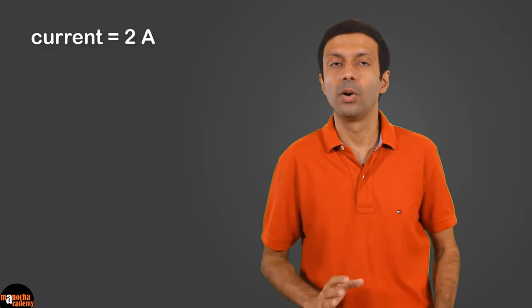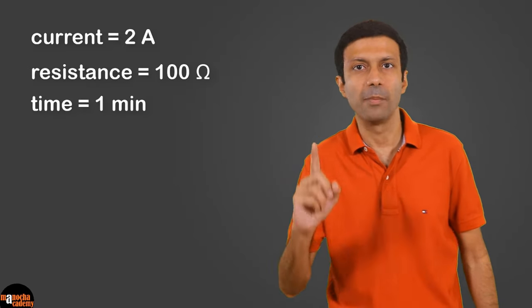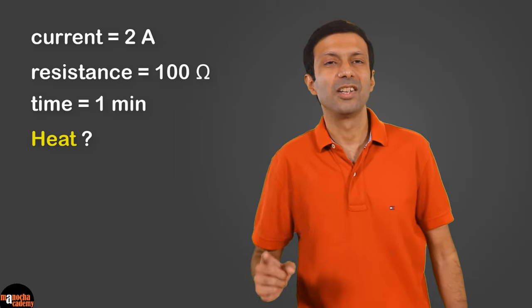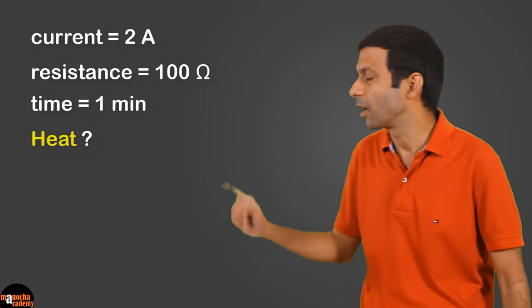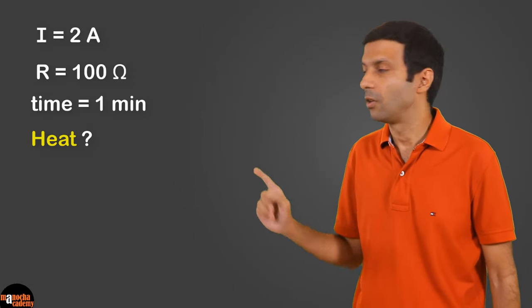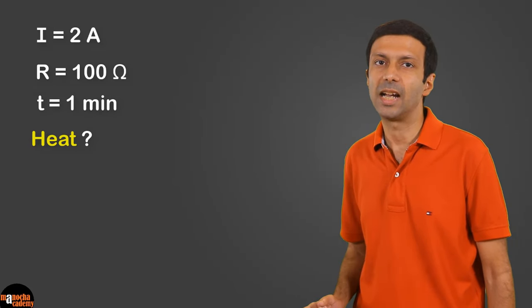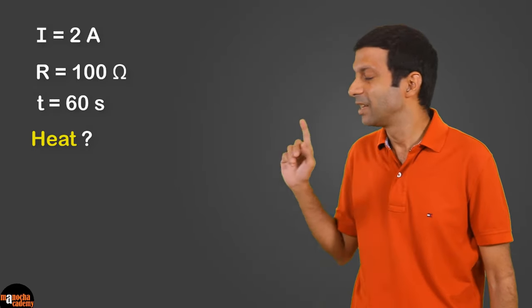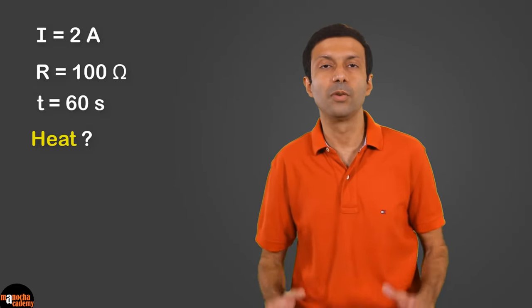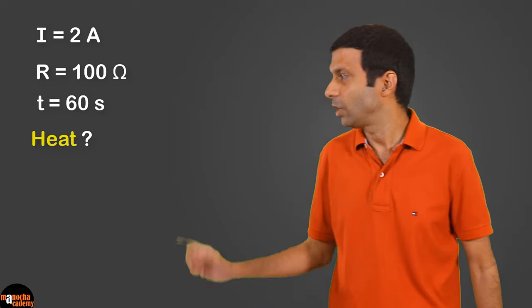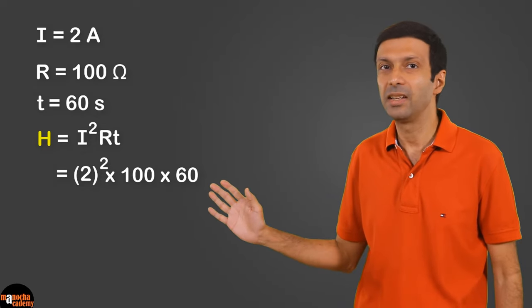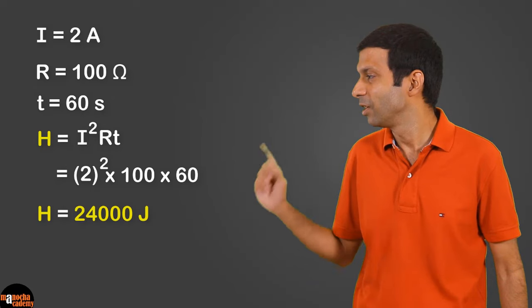Let's take an example. Let's say a current of 2A passes through a wire of resistance 100 ohm for 1 minute. How much heat is produced in the wire? We have current I = 2A, resistance R = 100 ohm, and time T = 1 minute, which we convert to 60 seconds. Using the formula from Joule's law of heating, H = I²RT, and substituting the values and multiplying, we get the heat energy equal to 24,000 joules.